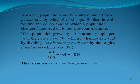However, populations are typically modeled by a percentage by which they change. So how do we find the percentage by which a population changes? If the population grows by 40,000 people per year, then the percent by which the rate changes is found by dividing the absolute growth rate, which was 40,000 (represented as 40), by the original population, which was 100. 40 divided by 100 equals 0.4, which is 40%. This is known as the relative growth rate.